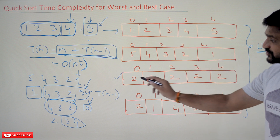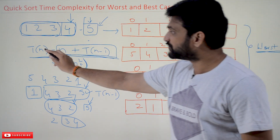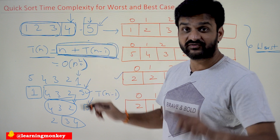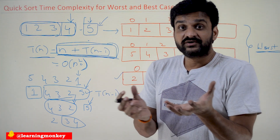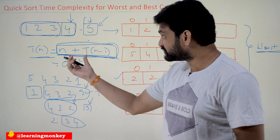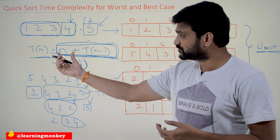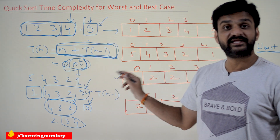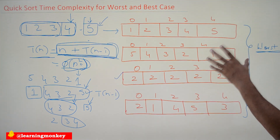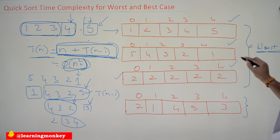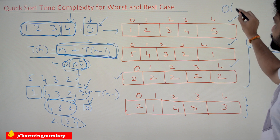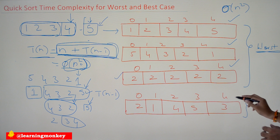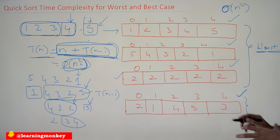In all these worst cases — elements in sorted order, reverse/descending order, or all elements of the same value — the time taken satisfies T(n) = n + T(n−1). Solving this by substitution gives n², so the worst-case efficiency of quicksort is Θ(n²).